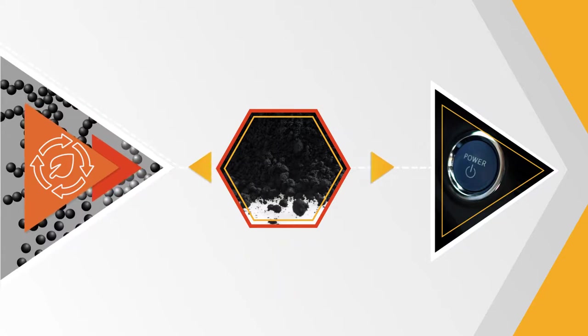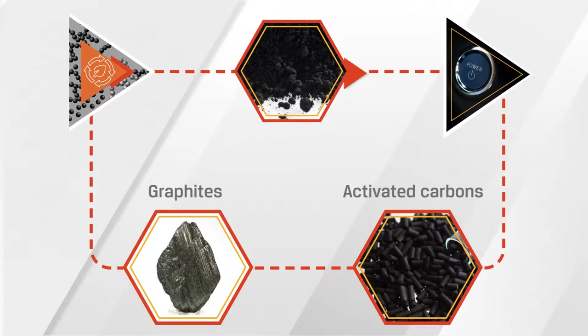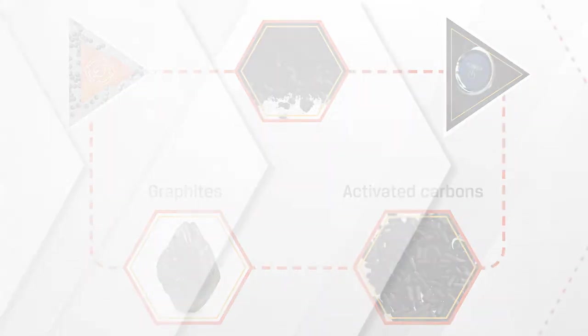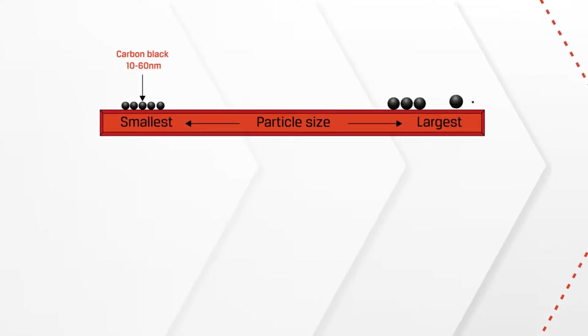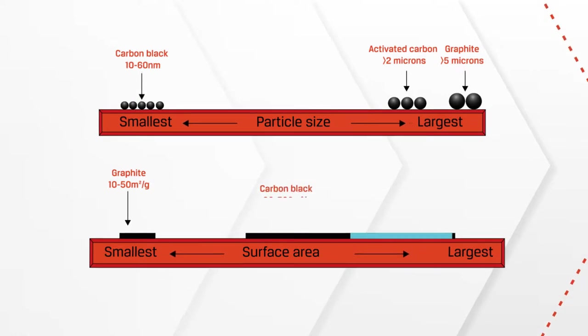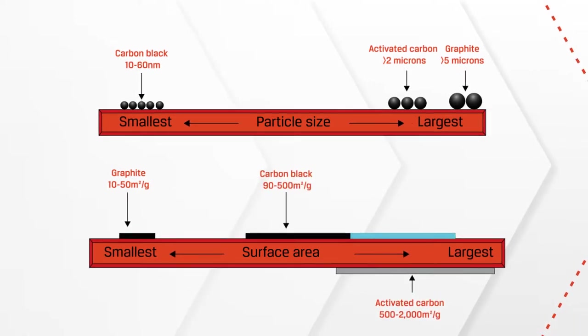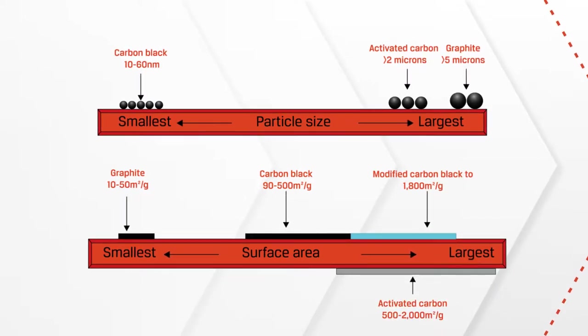There are two main characteristics of carbon black additives—surface area and particle size—that differentiate them from other carbons. Carbon blacks are small particles when dispersed, and their surface areas can range from very low to very high. Whereas graphites and activated carbons are large particles whose surface area is either limited as in graphites, or less accessible as in activated carbons.